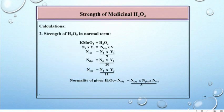Strength of H2O2 in normal term: permanganate corresponds to H2O2, so N4 times Y1 equals NA times 9. Therefore NA equals N4 times Y1 divided by 9 ml. Do the calculation for NB and NC, so the normality of given H2O2 equals ND equals NA times NB times NC divided by 3.